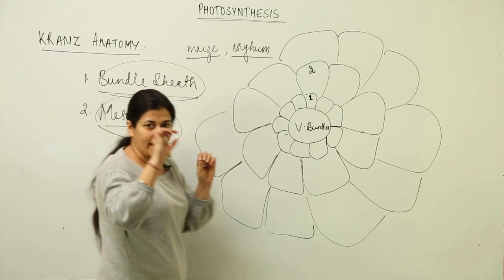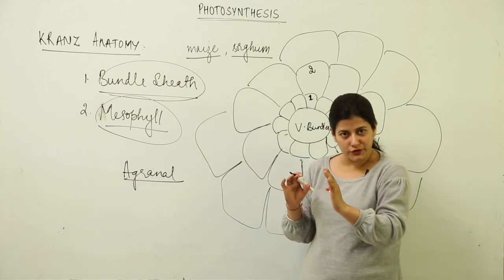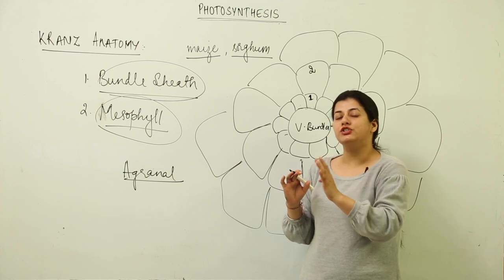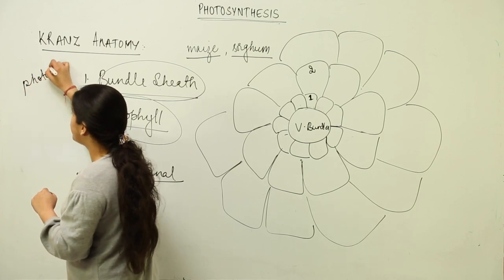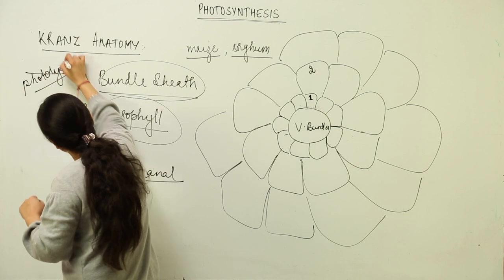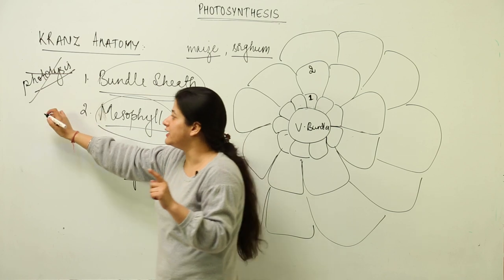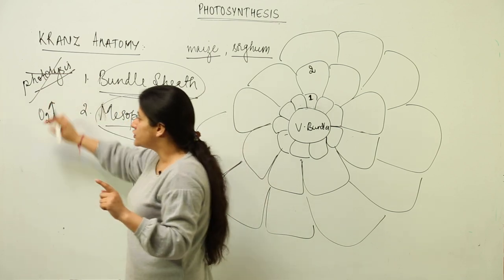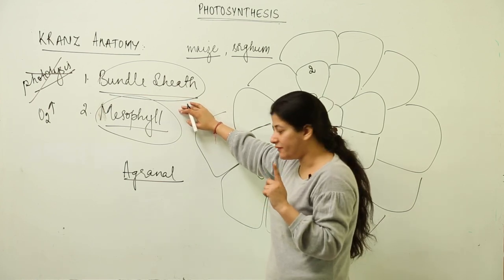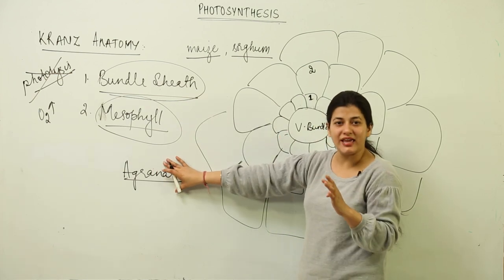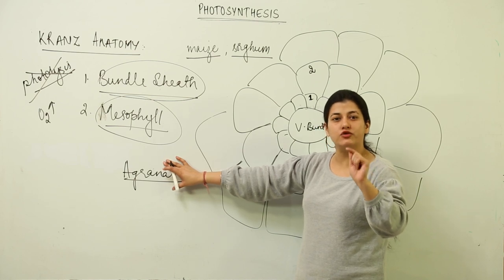Stroma lamellae are present, and a lot of ATP is generated by cyclic photophosphorylation. Non-cyclic photophosphorylation does not occur because the chloroplasts of bundle sheath cells do not undergo photolysis of water. Photolysis of water leads to evolution of oxygen, so to avoid oxygen entry, the chloroplasts are agranal with stroma lamellae performing cyclic photophosphorylation.